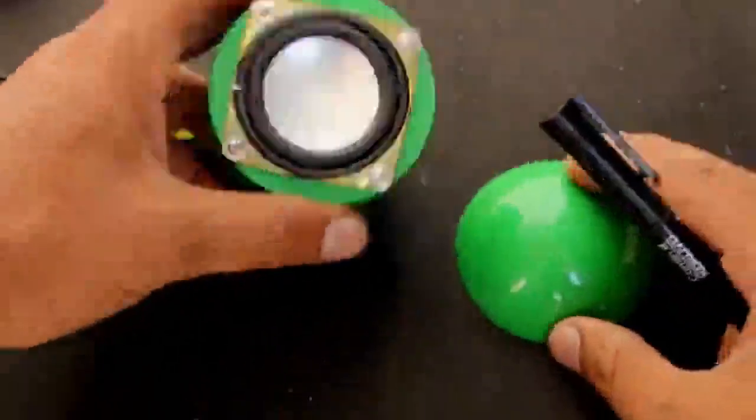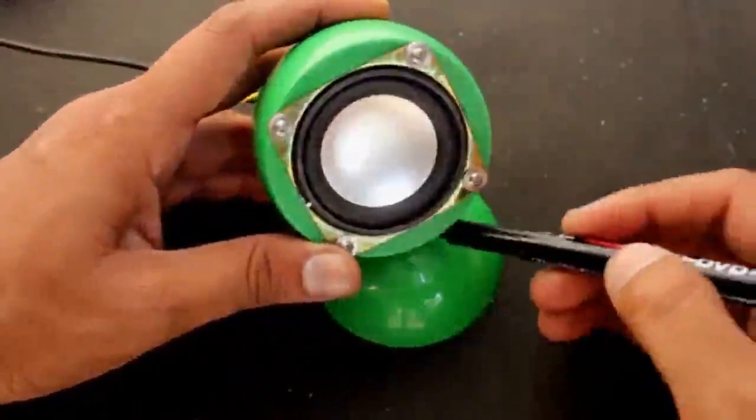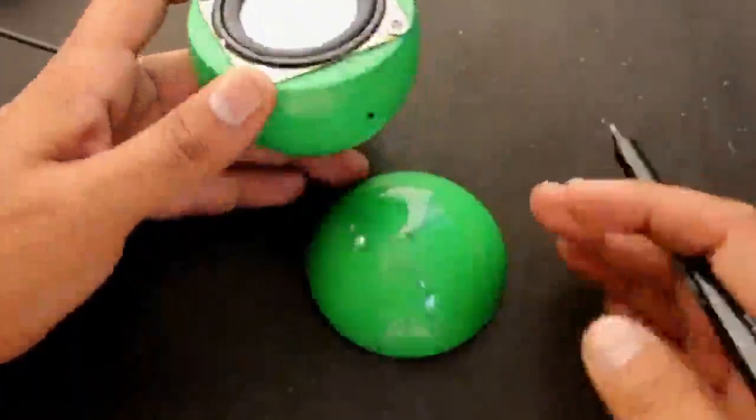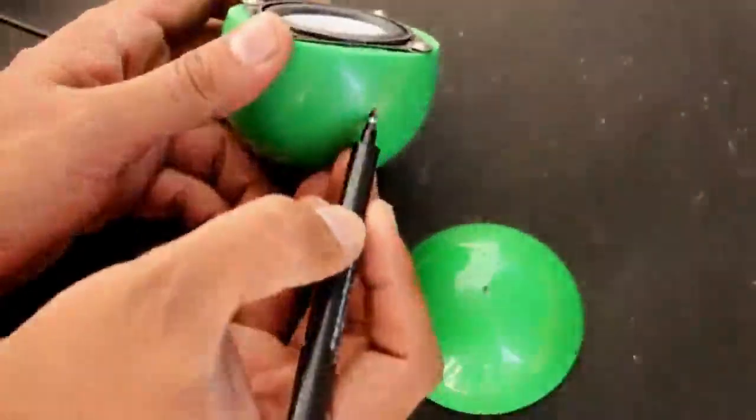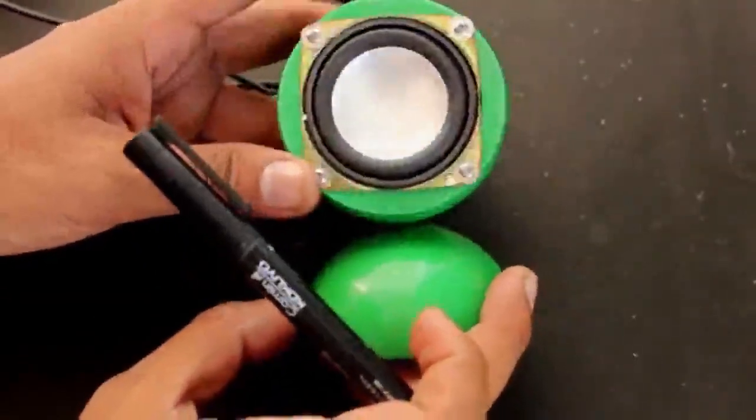Now to fix the base to the speaker ball, take the cap of the ball and place it below the speaker. Mark the point where the speaker touches and make a hole using a hot object, then fix with a screw.